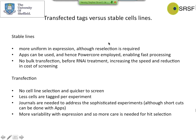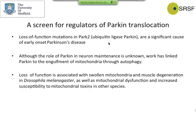Even though we've done an identical screen with two different approaches — transfection versus stable cell line — the overlap of genes is about 85% from the two screens. They've secondary-tested these in Drosophila and are now working to move forward with these genes in the human system. They have 30 robust genes they're quite happily working on and writing up for publication.